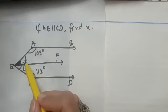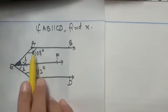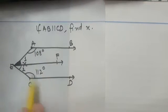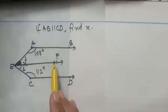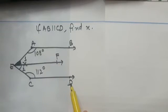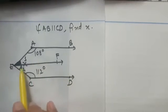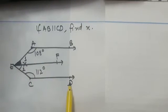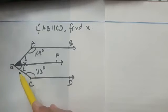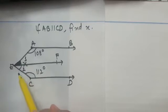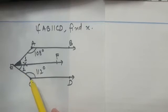From the co-interior angle relationship: angle 1 plus 108 equals 180 degrees. Similarly, AB is parallel to CD and EF is constructed parallel to AB, so EF is also parallel to CD — because lines parallel to the same line are parallel to each other. So EF is parallel to CD, and with EC as transversal, angle 2 plus 112 equals 180 degrees, since they also form co-interior angles.